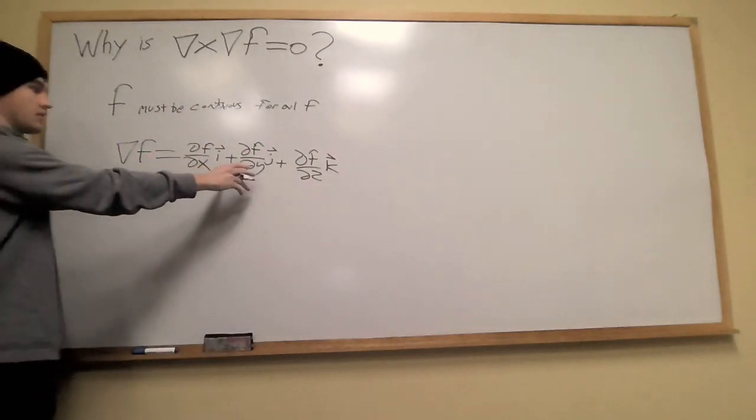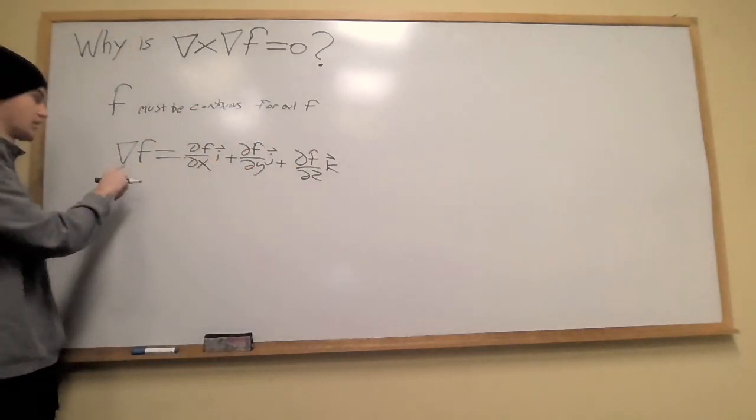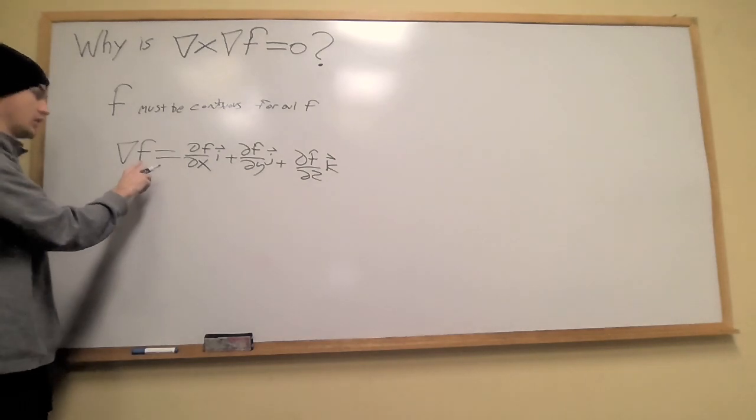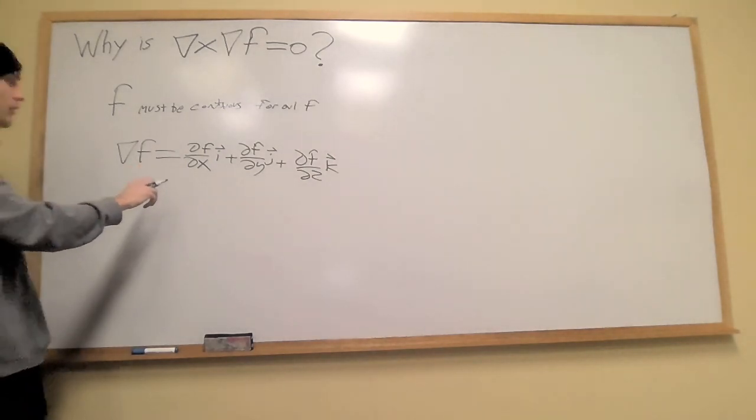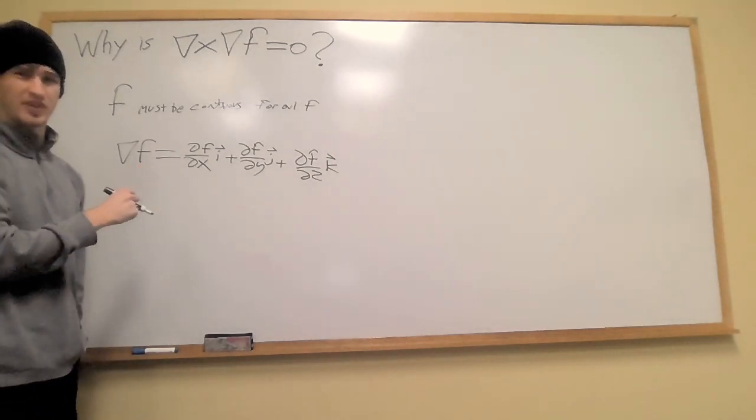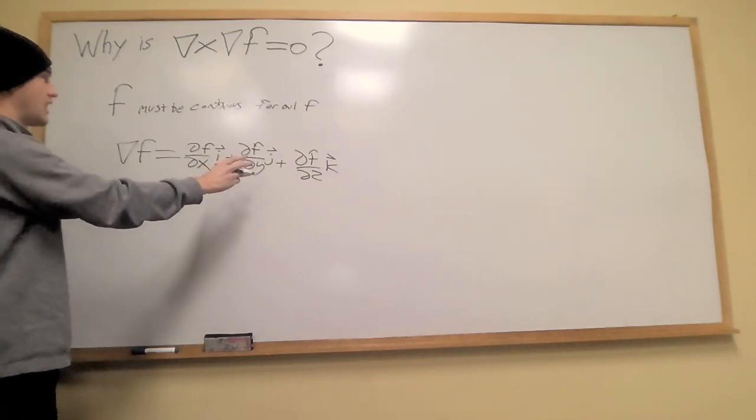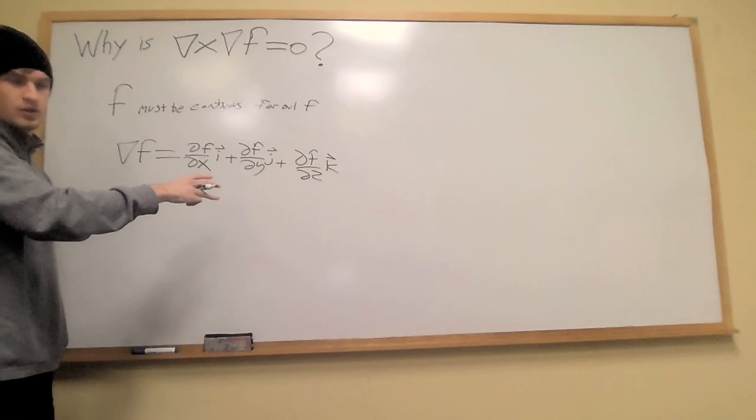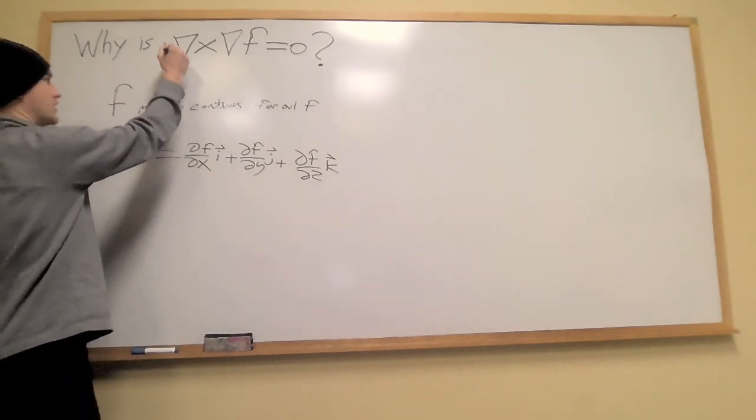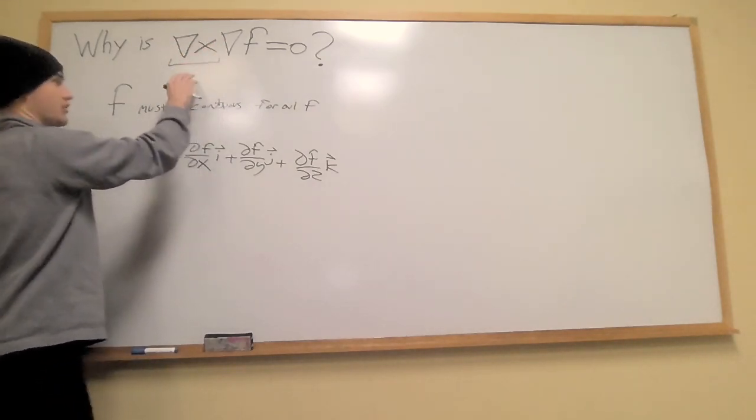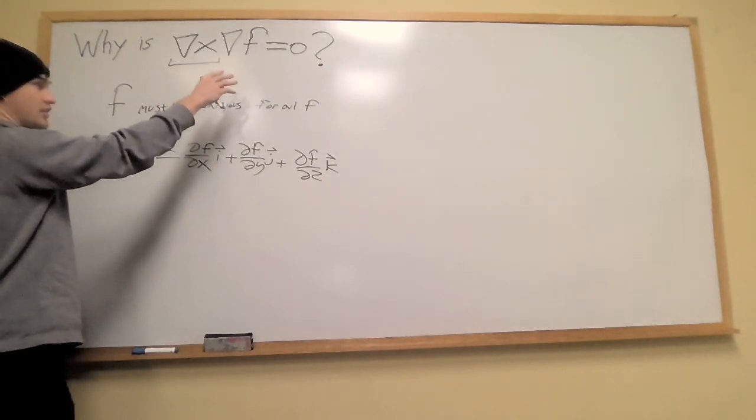This is the vector field created by taking the gradient of the scalar field f. Scalar fields, a common example is temperature. So why would this new field have no curl? Curl is when the derivative operator is cross product with another vector.